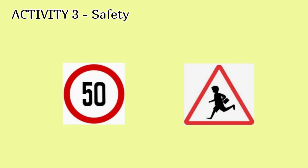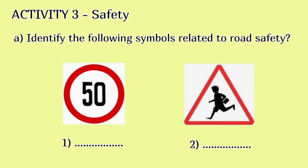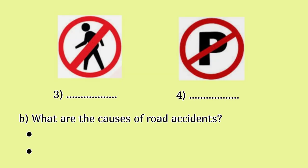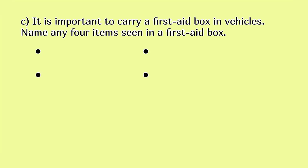Activity 3: Safety. A. Identify the following symbols related to road safety. B. What are the causes of road accidents? C. It is important to carry a first aid box in vehicles. Name any four items seen in a first aid box.